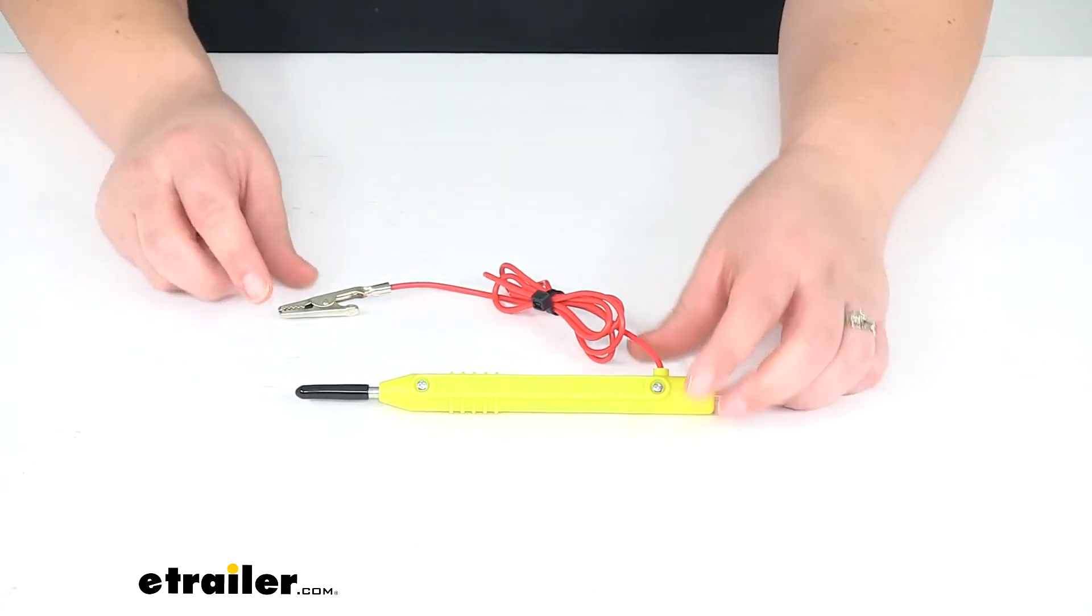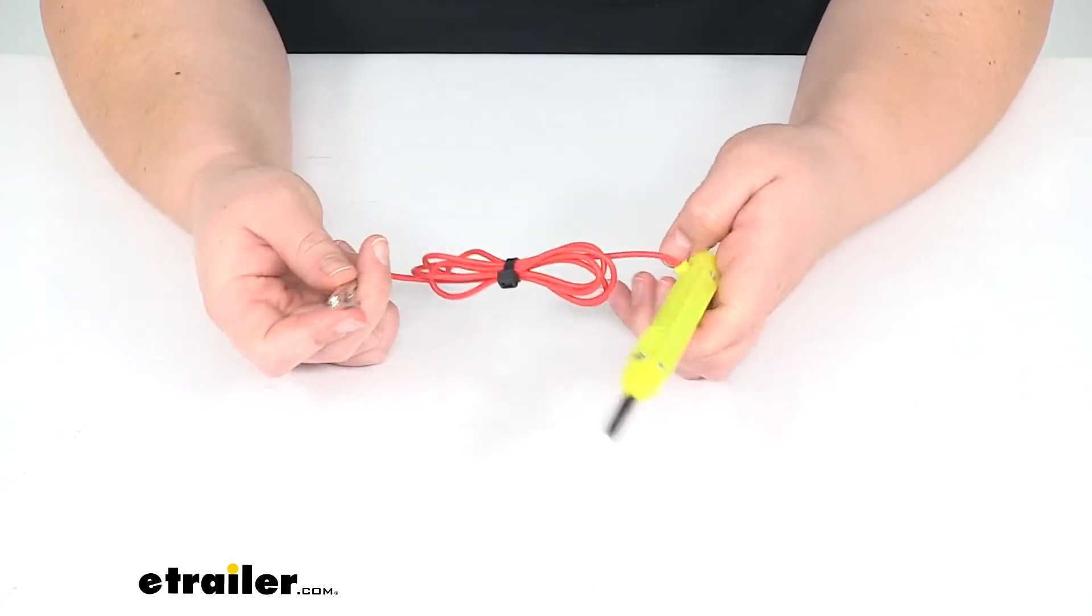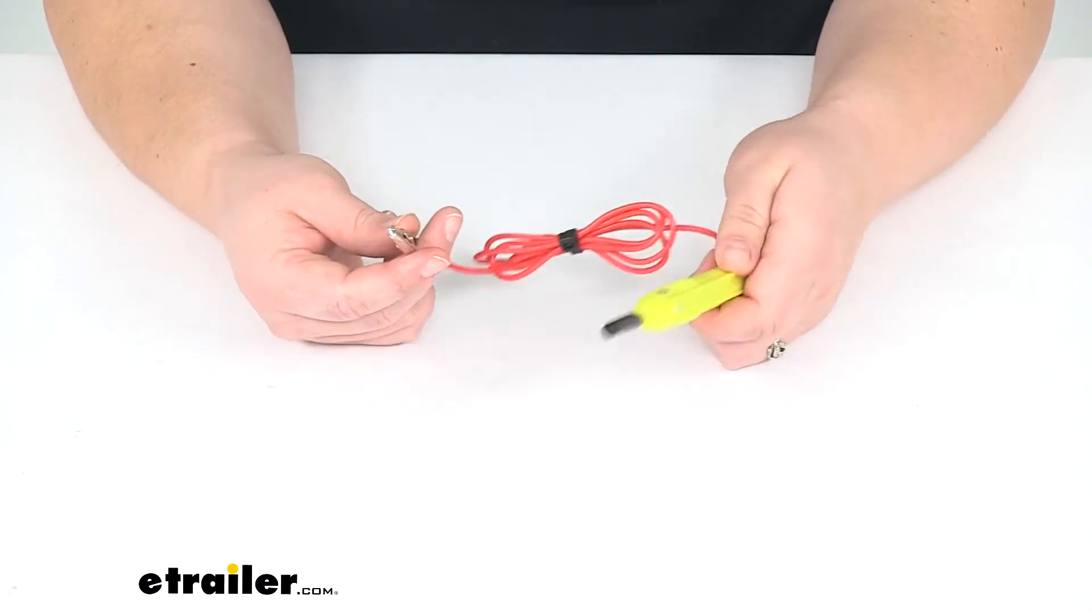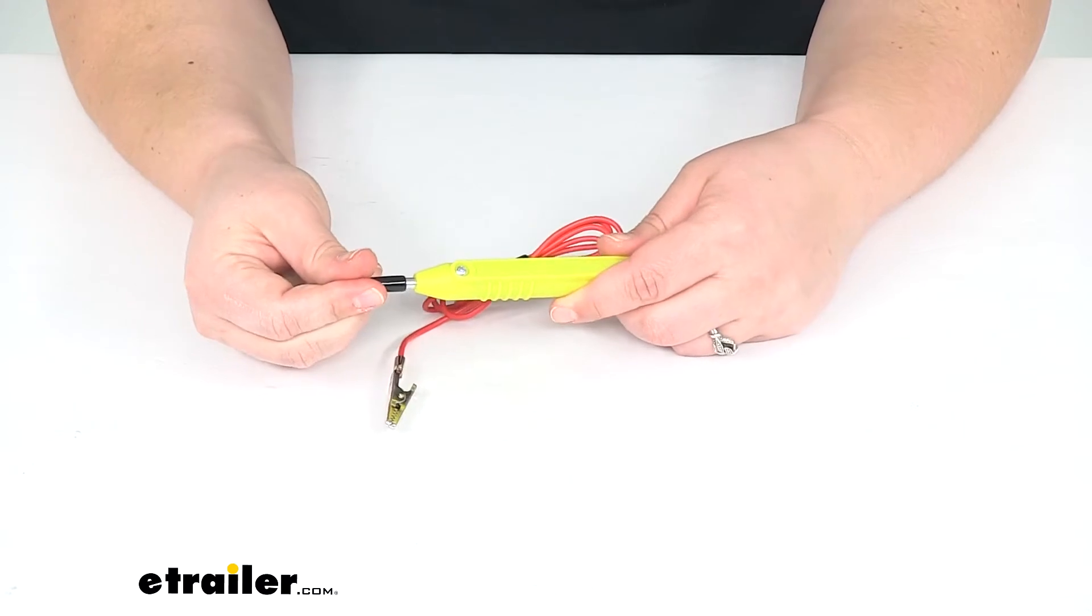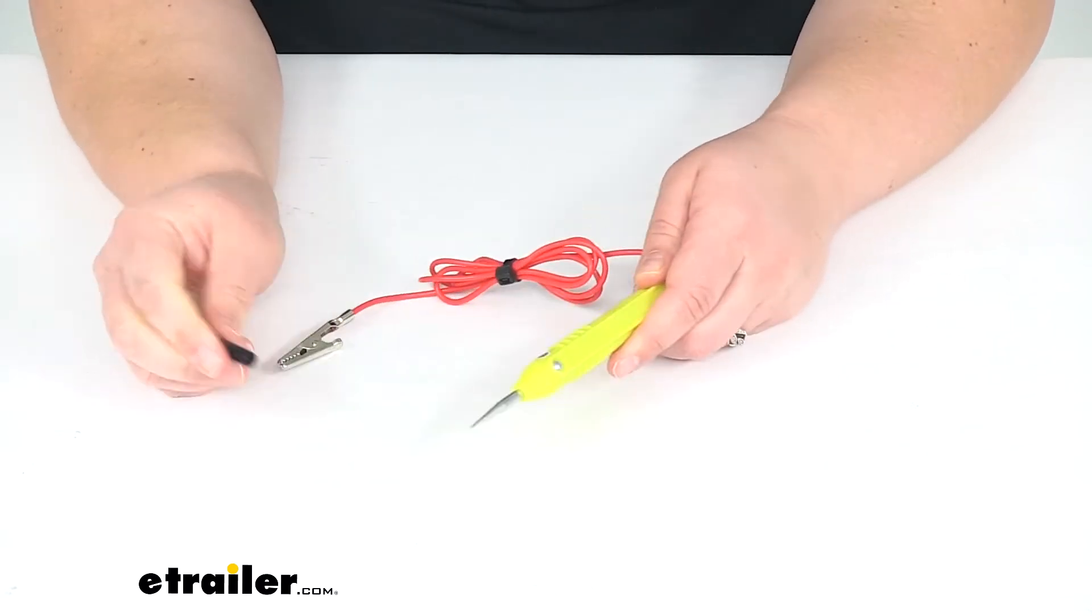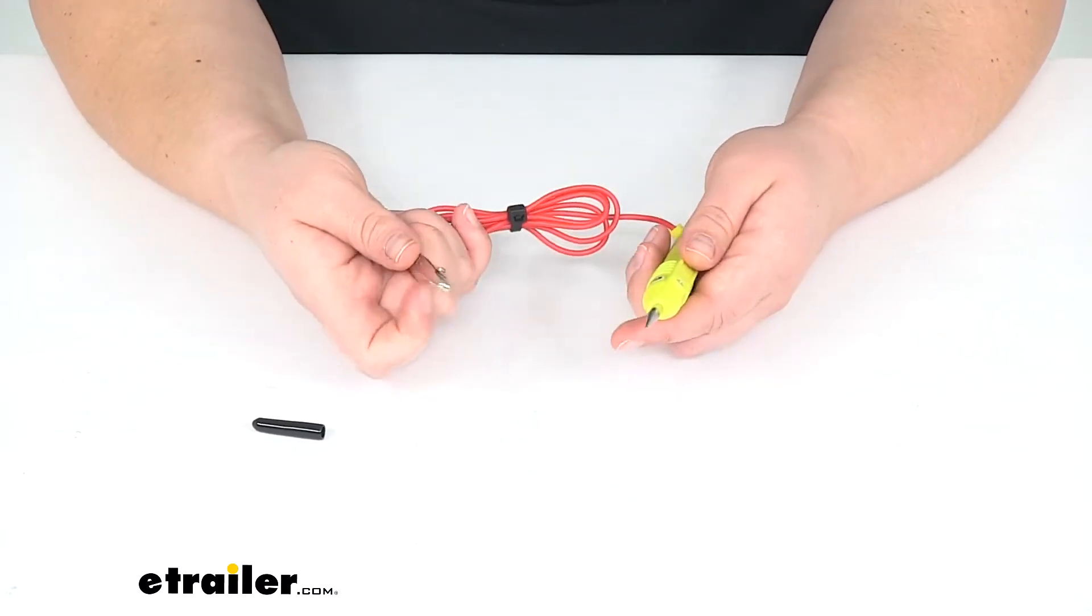This is going to be a continuity tester, so we'll be able to make sure that everything's functioning properly. Basically, you'll just have your little alligator clamp on the end of the wire and then your pointy end to test out those terminals.